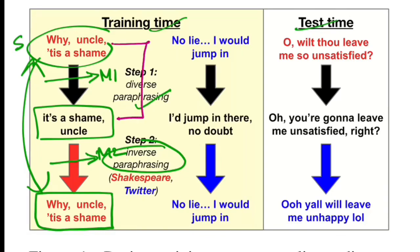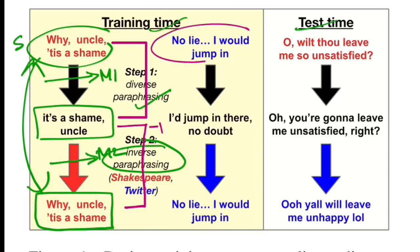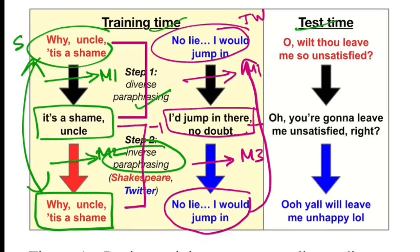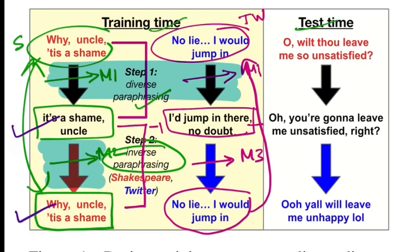Similarly, if the input sentence is in Twitter style, you pass it through the same M1 model, get a normalized paraphrased representation, then pass it through a different model M3, and again compute loss against the original sentence. In total there are three models: M1 (black, diverse paraphrasing) normalizes any sentence; M2 (red) takes the normalized sentence and reconstructs Shakespeare-style; M3 (blue) takes the normalized sentence and reconstructs Twitter-style writing.